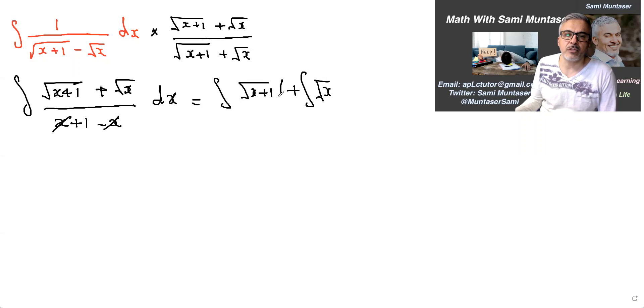You have to integrate each one separately. There is no substitution or anything like that here, because the derivative of x inside the square root is 1, and here is the same thing.